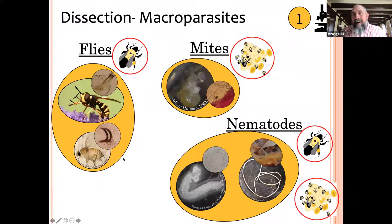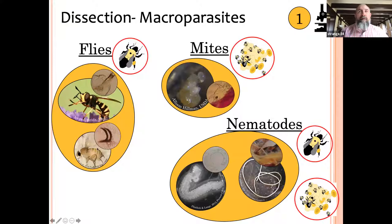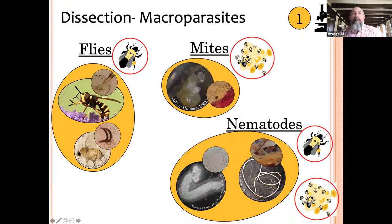There's also a phorid fly that parasitizes bees — this is the one responsible for the 'zombie honeybee' story, where parasitized bees go toward lights at night. If you're out in your backyard in summer and see honeybees buzzing around lights, they're often parasitized by phorid flies — catch them in a jar and flies will eventually emerge. There are also mites on bees, both external and internal. Bumblebee tracheal mites — different from honeybee tracheal mites — live in the abdominal air sacs and can kill bees if levels get too high.